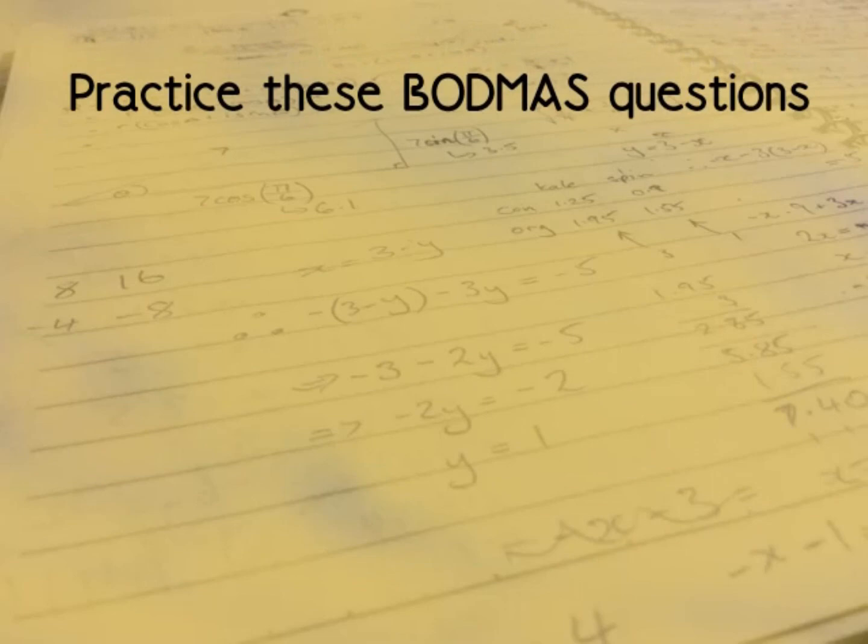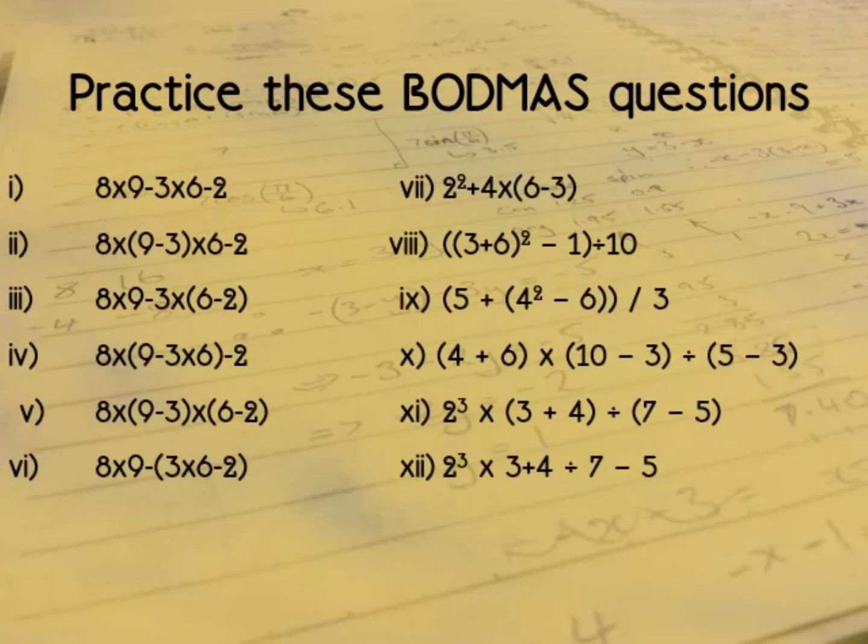So here's some BODMAS questions for you to practice if you'd like. We'll go quickly through the first one, which is the easiest one: 8 times 9 minus 3 times 6 minus 2. Apply BODMAS: no brackets, no orders, no division. Multiplication—so 8 times 9 is 72 and 3 times 6 is 18, that's all the multiplication. No addition. Subtraction: 72 minus 18 minus 2 is 52. So have a go with the rest of those if you'd like.